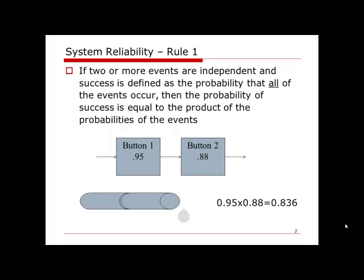By definition, we can easily calculate the system reliability as 0.95 times 0.88, which gives us a result of 0.836. In this video, when we calculate reliability, I always keep more than two digits after the decimal point, because for system reliability, a lot of times the difference happens in the third or even the fourth digit after the decimal point. So only two digits after the decimal point is not enough.